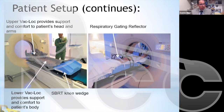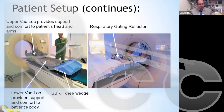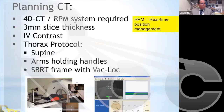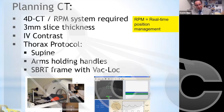For lung SBRT, we acquire a 4DCT scan, where the fourth dimension correlates with the respiration time being tracked. We use the Varian RPM system. A reflector is placed on the patient, and a camera positioned at the foot of the table monitors it at all times. The respiration pattern is quantified in the RPM software, producing a sinusoidal pattern.